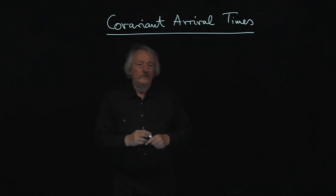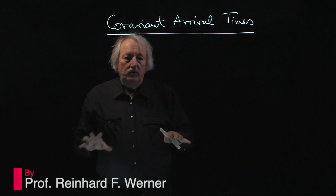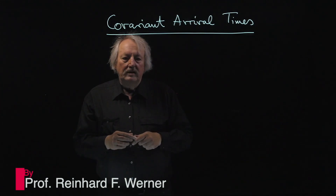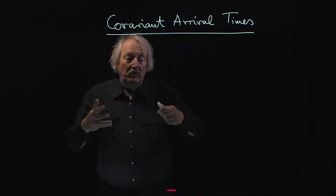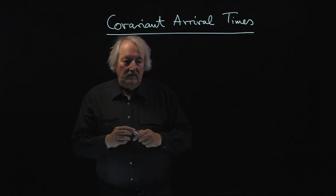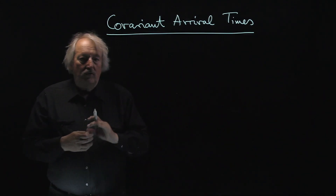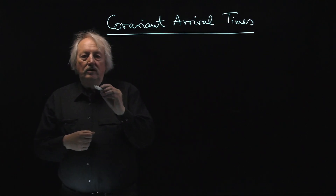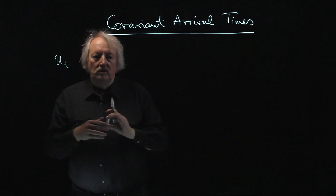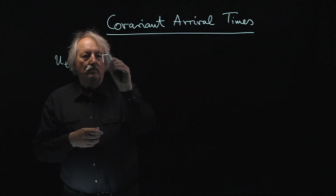After the general overview on different approaches to arrival times, I will now go through the different schemes and give you a bit more of the theoretical background — the mathematical tools, the language that you use to actually work with these. The first of these that I presented before is the covariant approach. We assume that we know what the time evolution of the system is, and then we look at an operator-valued measure.